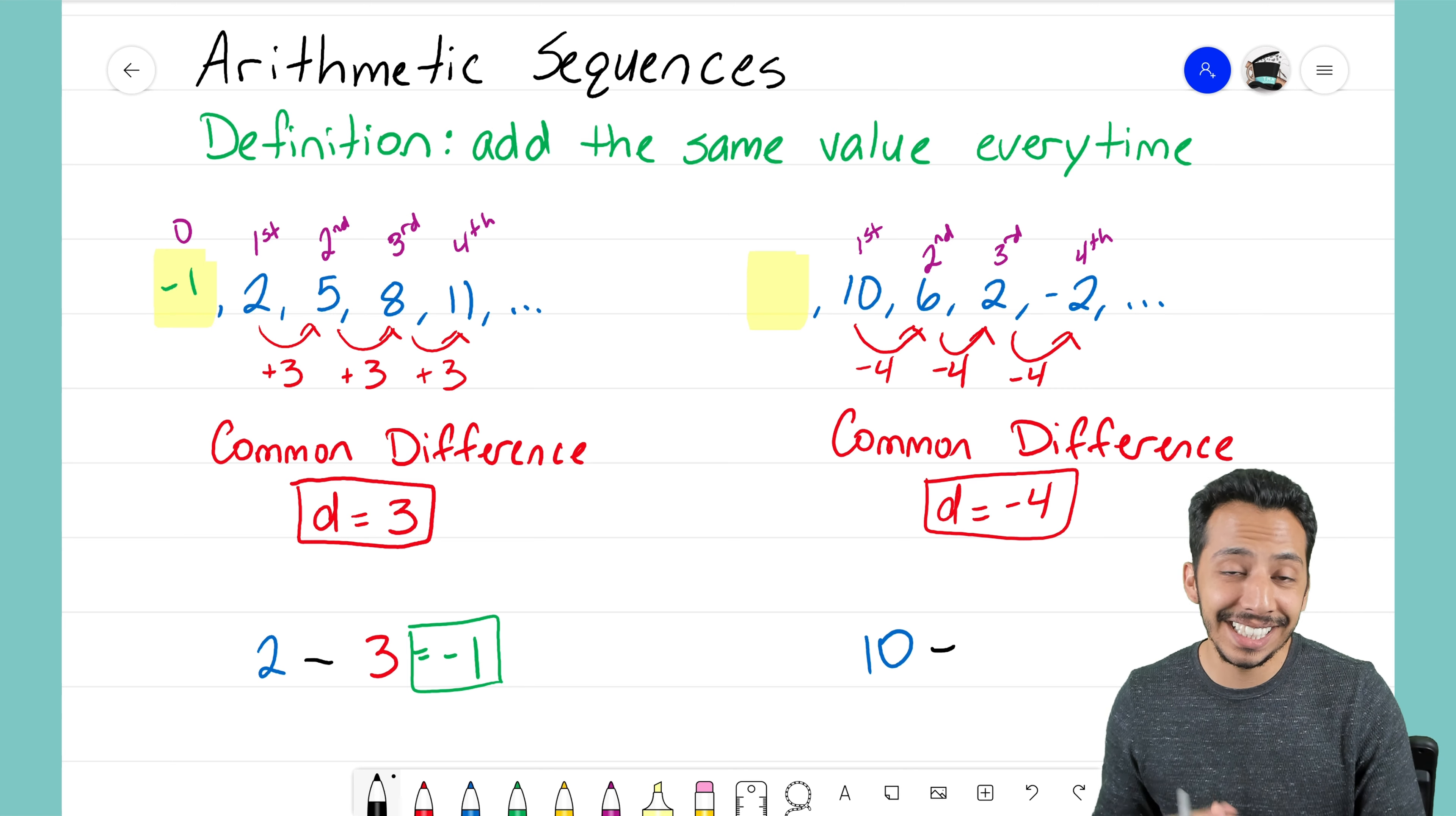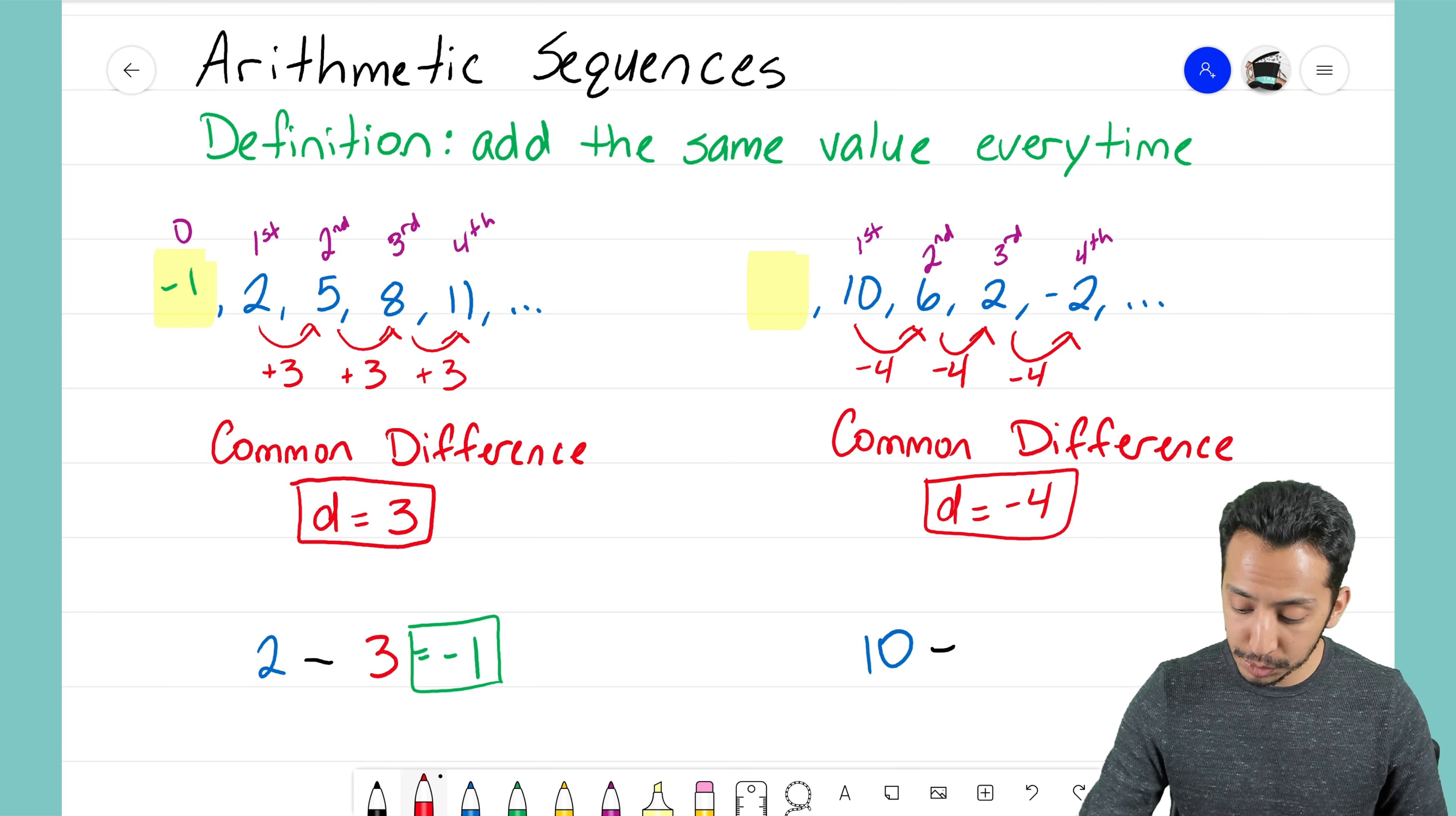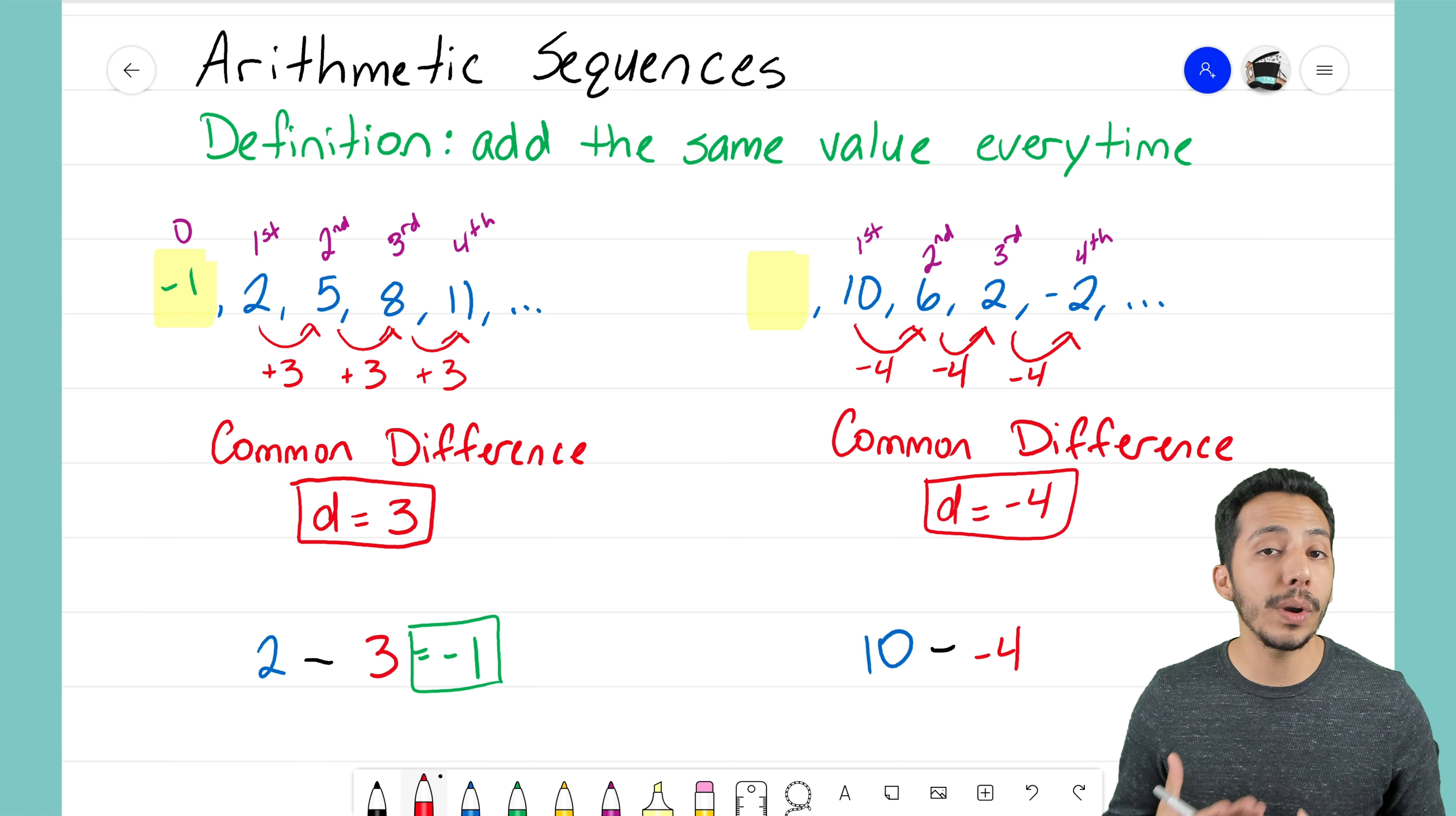Now the difference here with this sequence is that our common difference was negative 4. So I do have to make sure that I'm writing minus negative 4 there. I don't just want to write a 4 because it won't end up being the correct answer.